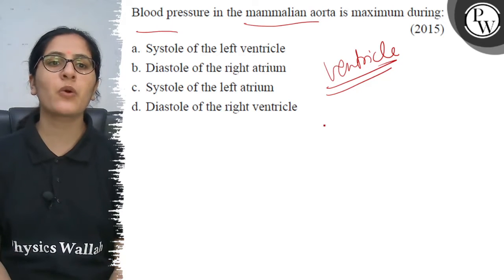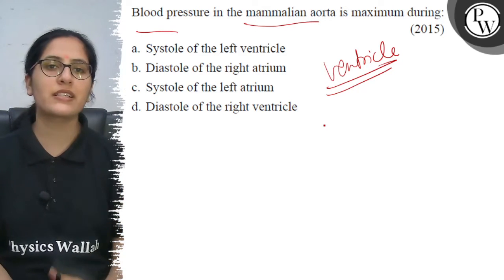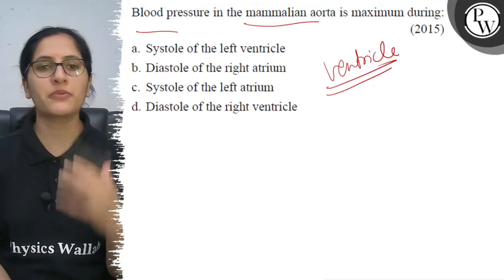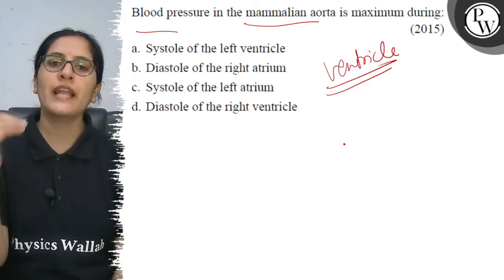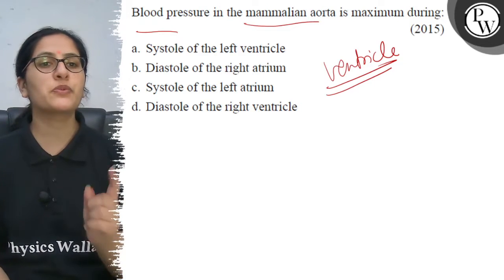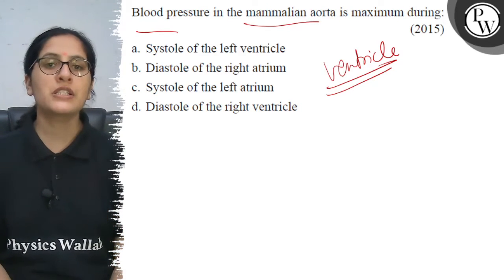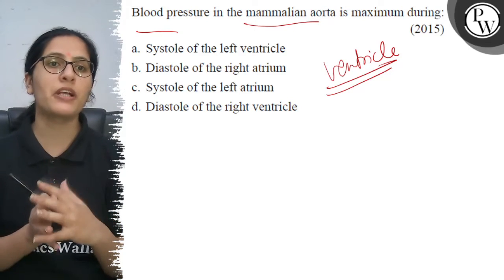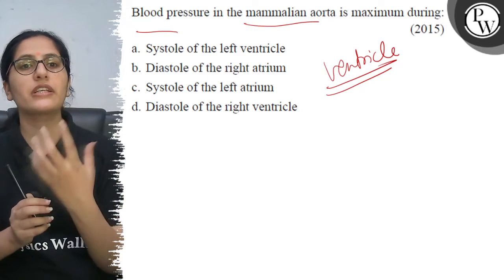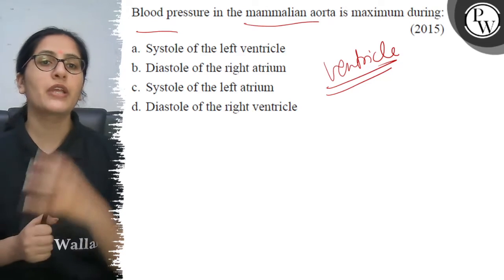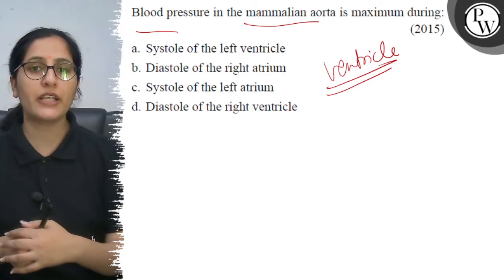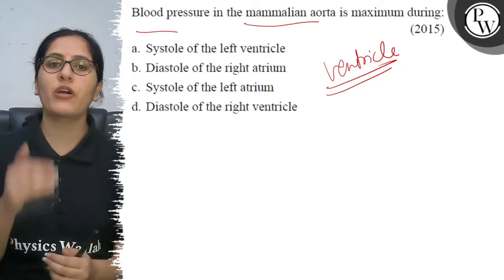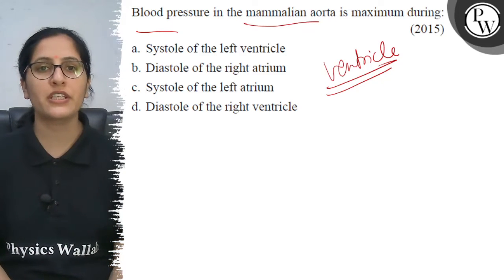In that condition, the tricuspid or bicuspid valves present between the right atrium and right ventricle, and the left atrium and left ventricle, are closed. When the valve is closed, the ventricle is in a systolic condition because the ventricle has more blood and there will be contraction.